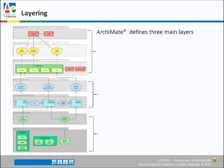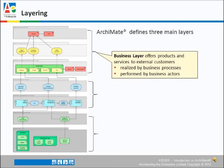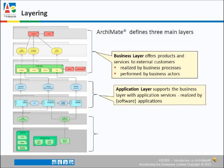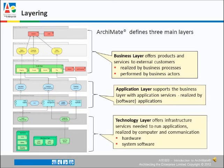Archimate defines three main layers: the business layer, the application layer, and the technology layer.